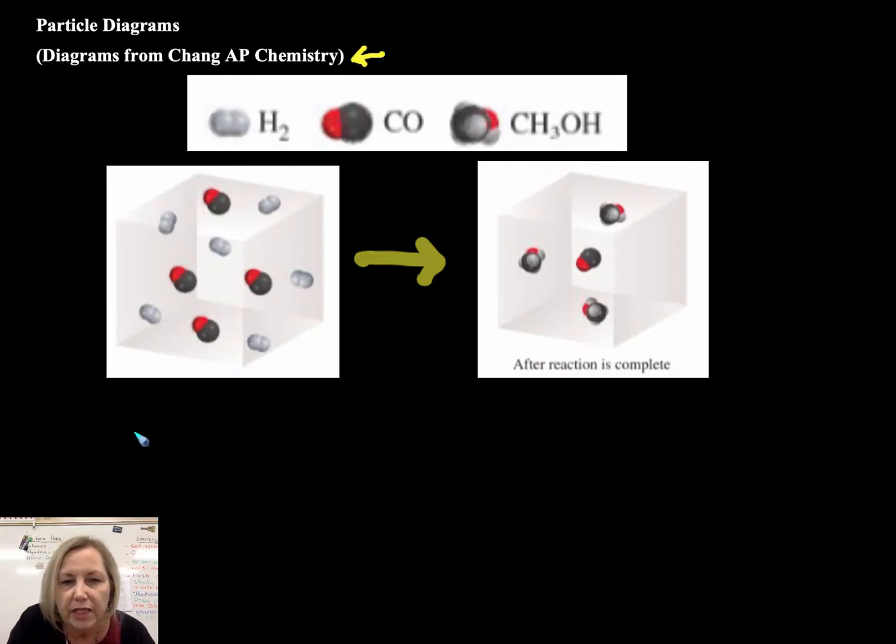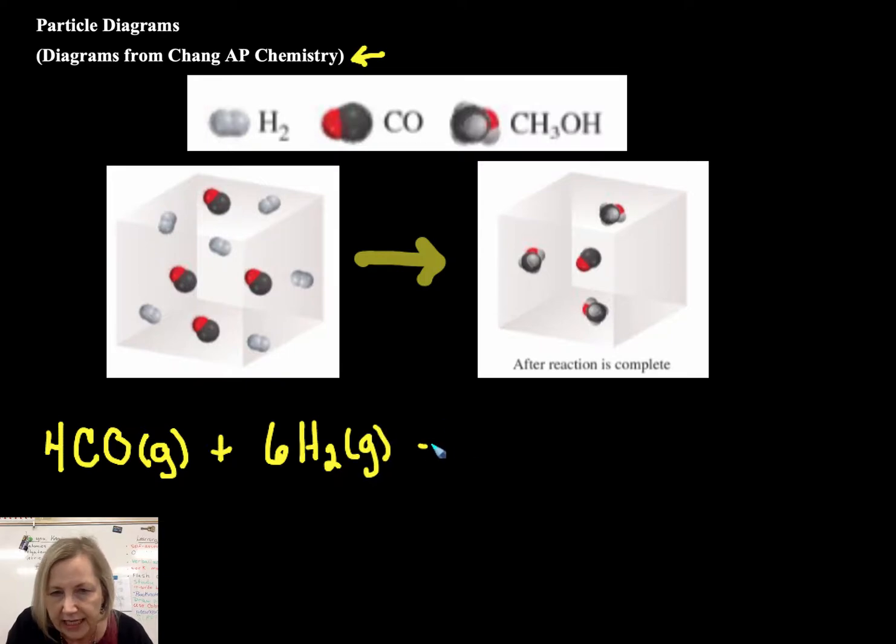Now if we notice we've got carbon monoxide represented by a black for carbon and a red for oxygen, which is quite common by the way. You notice these molecules are freely moving and taking up the space of the container. So that's gaseous and I have four of them. Now on this side I'm seeing one, two, three, four, five, six diatomic hydrogen gas molecules represented.